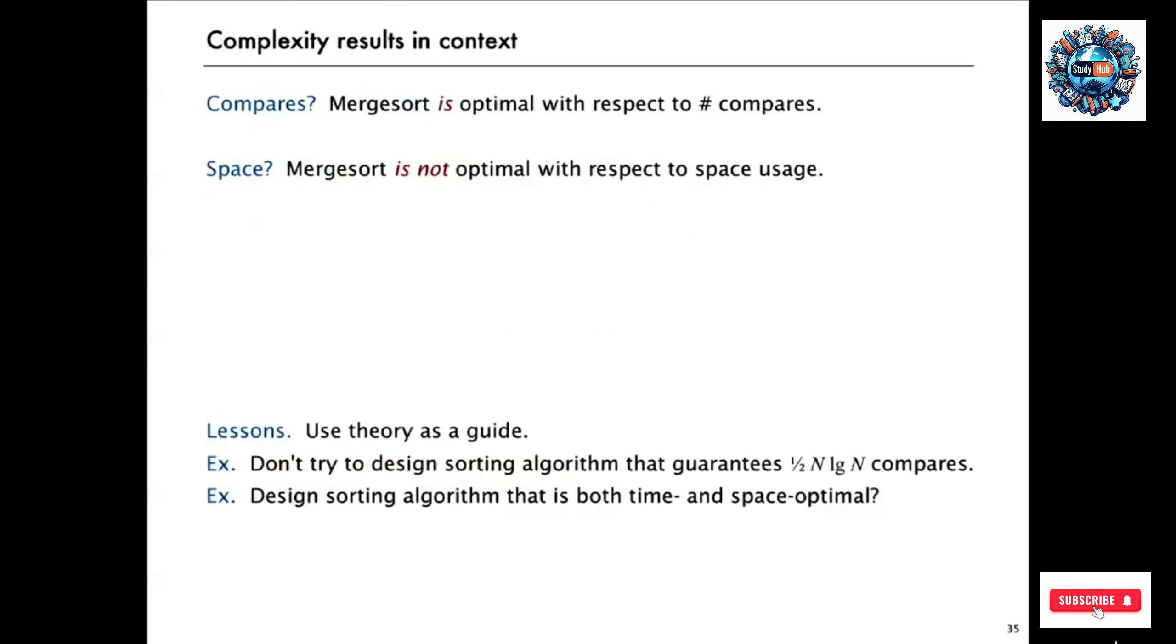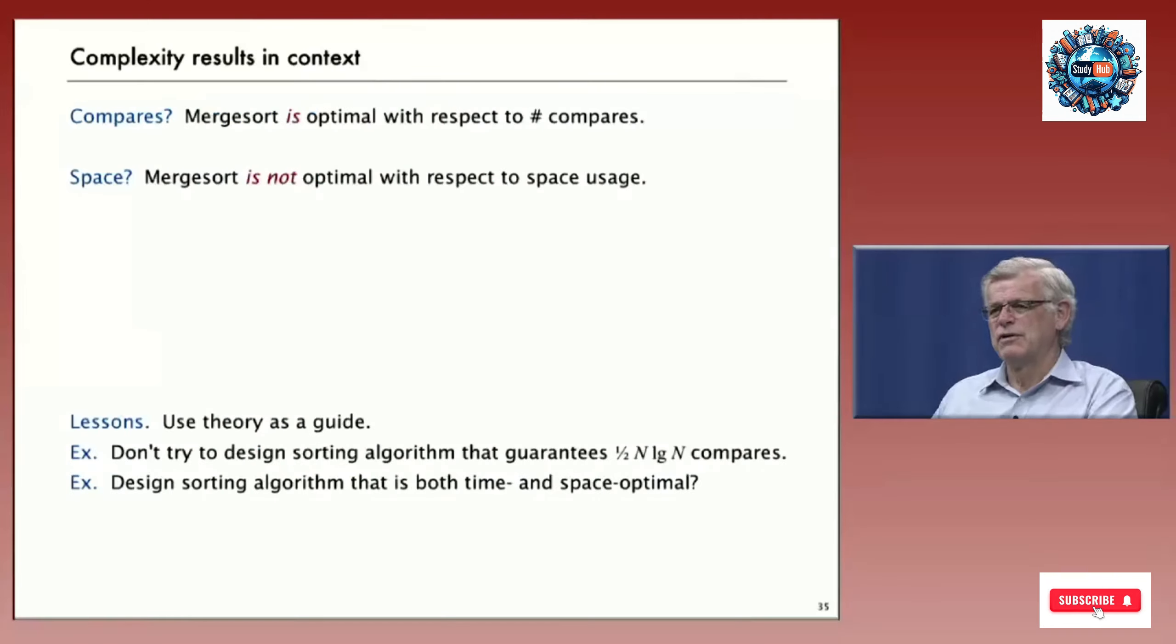Now you have to take these results in context. Really what we proved is that merge sort is optimal with respect to number compares. But we already know that it's not optimal with respect to space usage. Merge sort uses extra space proportional to the size of the array it has to sort. And simple algorithms like insertion sort don't - they don't use any extra space at all.